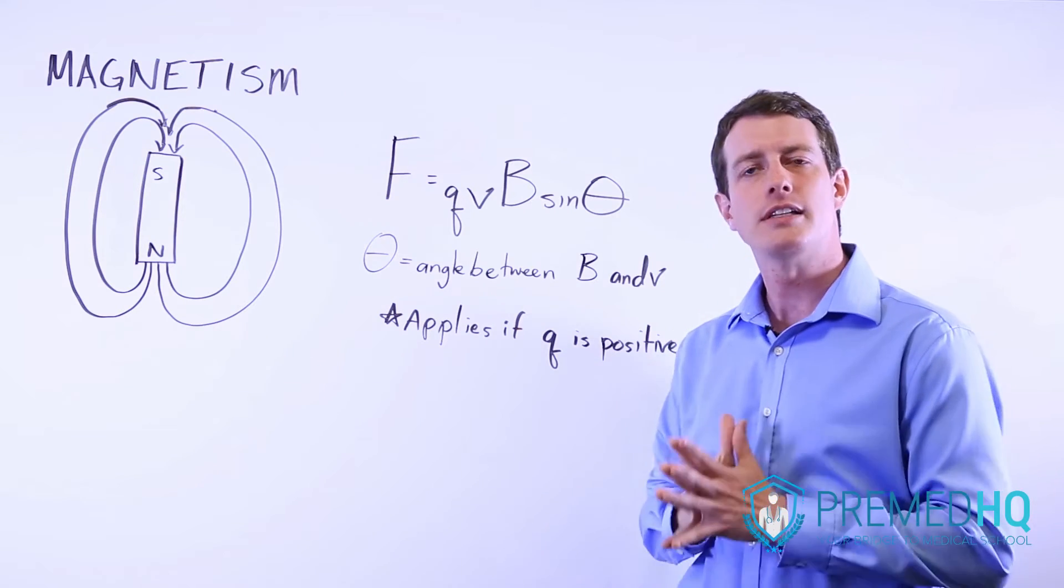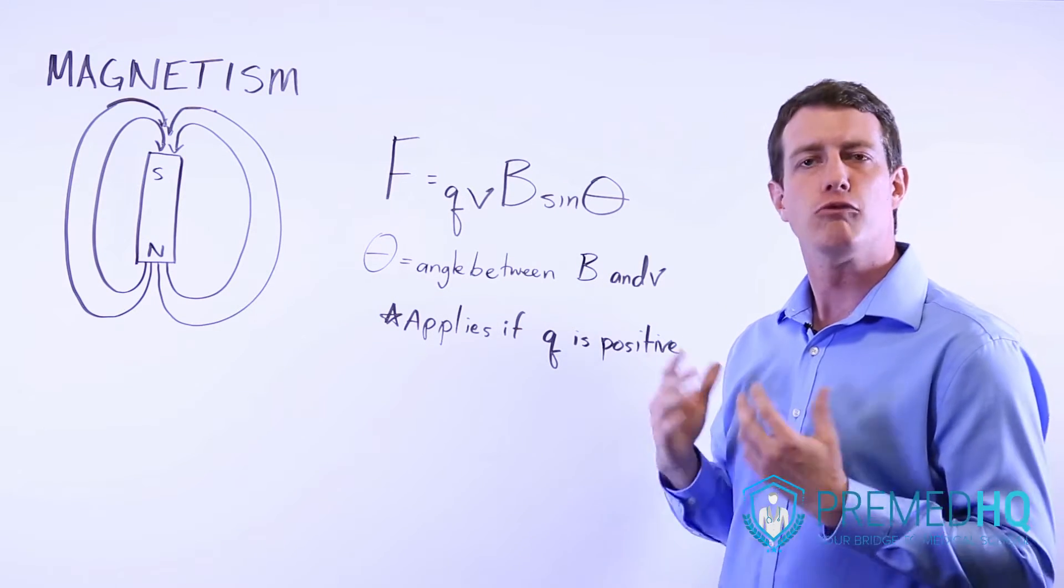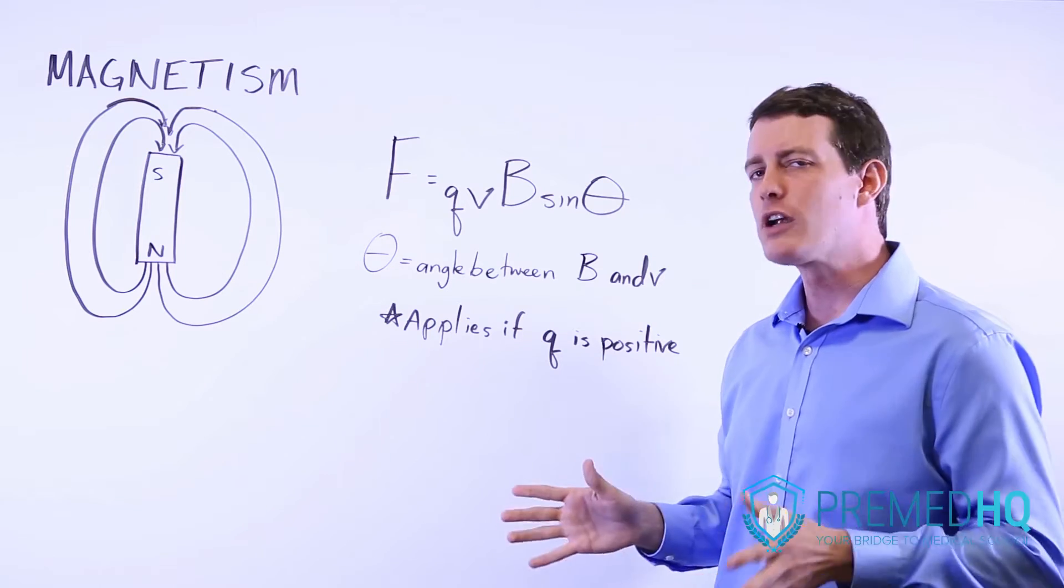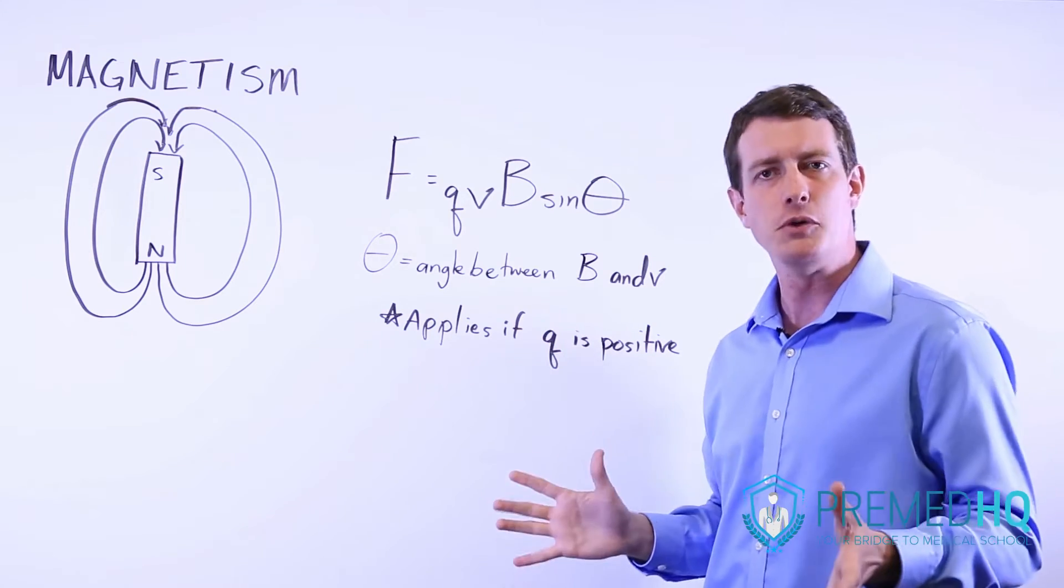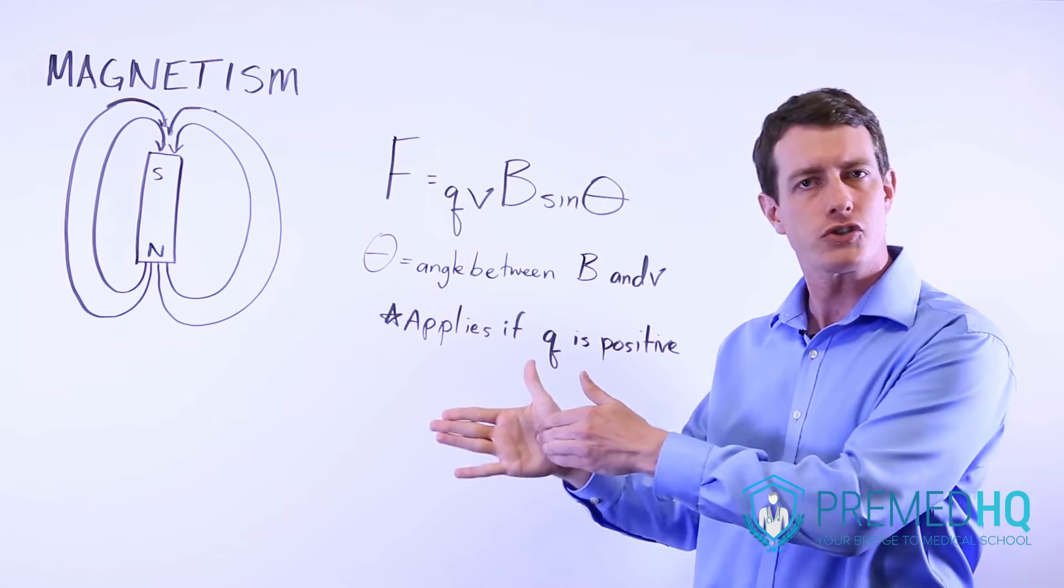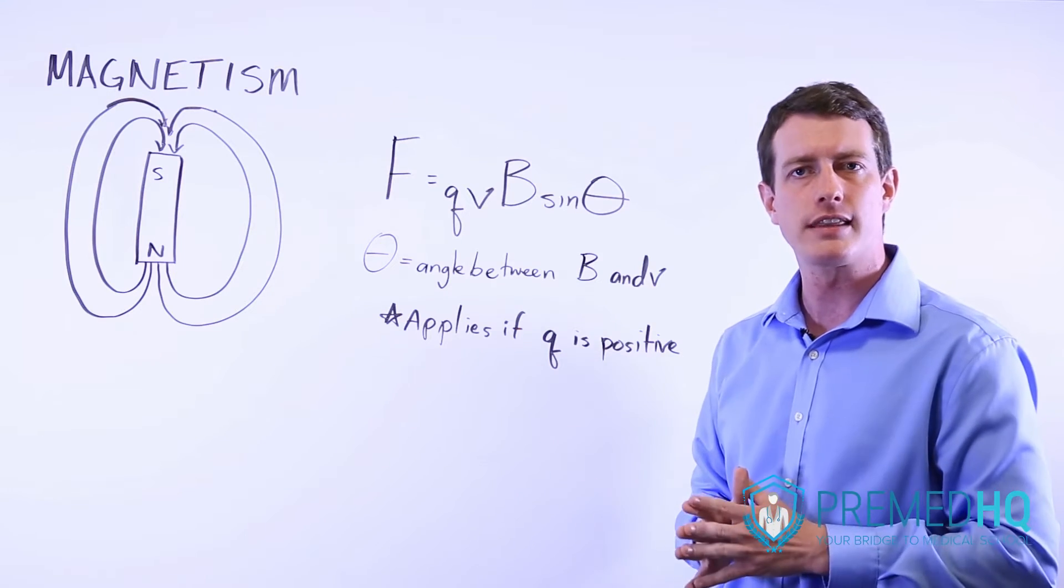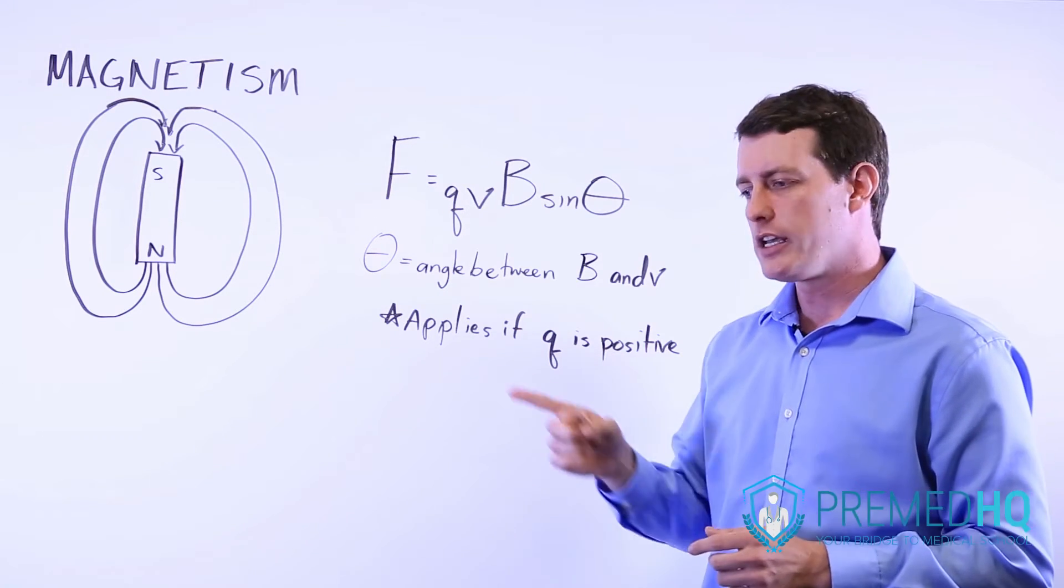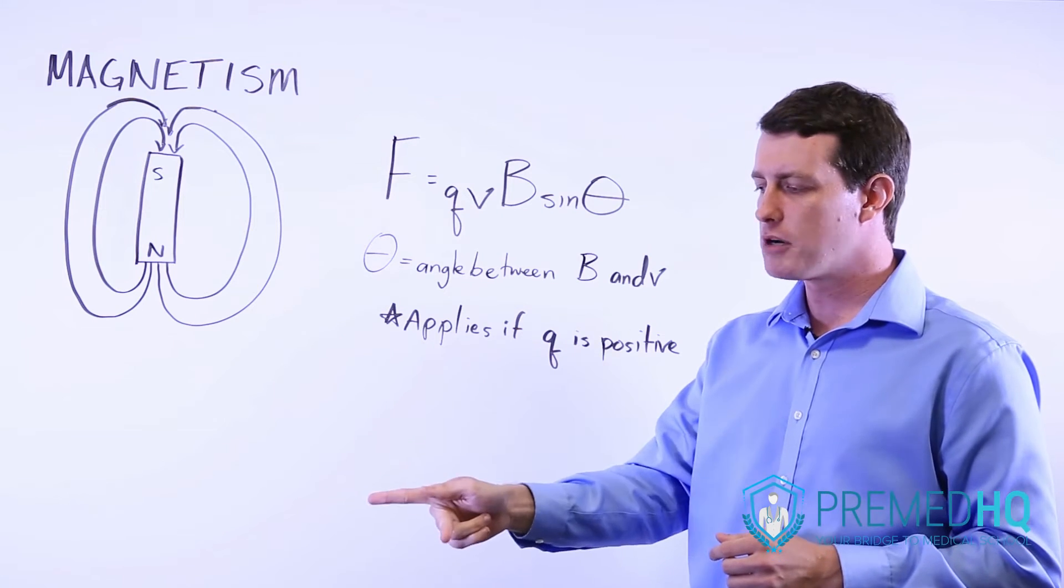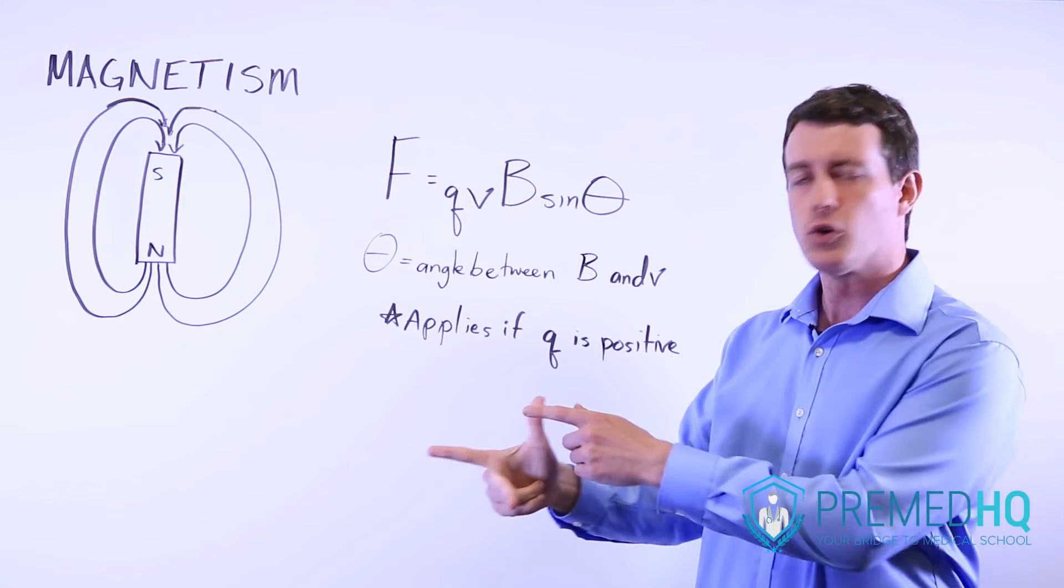Now this is commonly tested with the right hand rule, and the right hand rule is fairly straightforward. You've seen it taught probably in a few different ways. Some people talk about your fingers and your palm and different things like that. The way I prefer to do it is with your index finger, your middle finger, which is perpendicular to that, and your thumb.